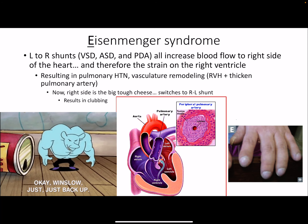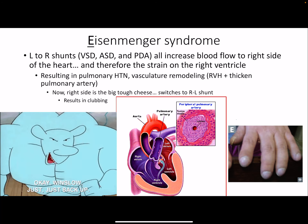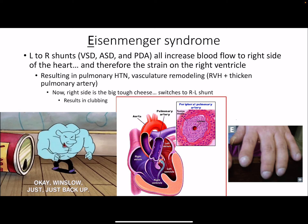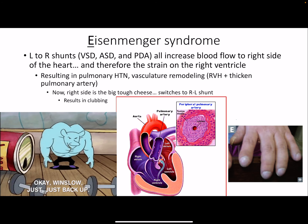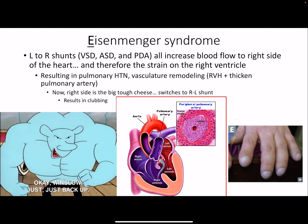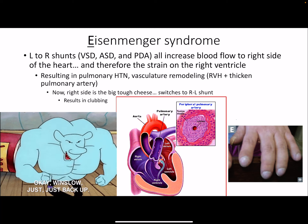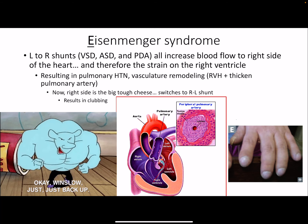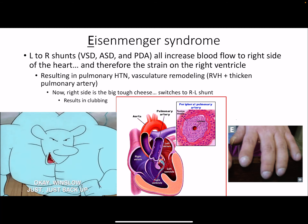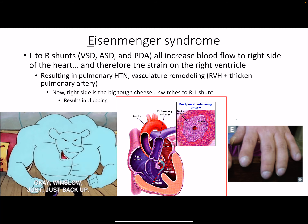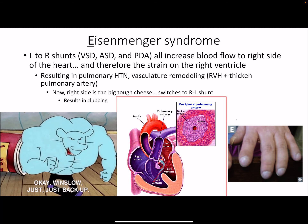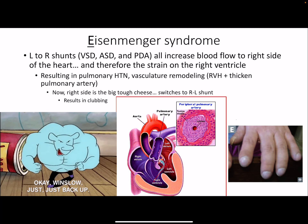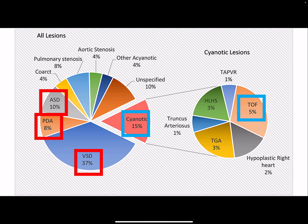Eisenmenger syndrome: all of these left-to-right shunts mean the right side of the heart is pumping more blood, causing more strain on the right ventricle. It will hypertrophy, and the vessels will remodel and become thicker due to hypertension. Now the right side of the heart becomes particularly strong, and what was a left-to-right shunt may reverse to a right-to-left shunt. For example, a VSD that was high pressure left to low pressure right ventricle may now push blood toward the left. This is associated with clubbing of the hands and fingers. Most defects are left-to-right — VSD, PDA, ASD — showing up later in life.